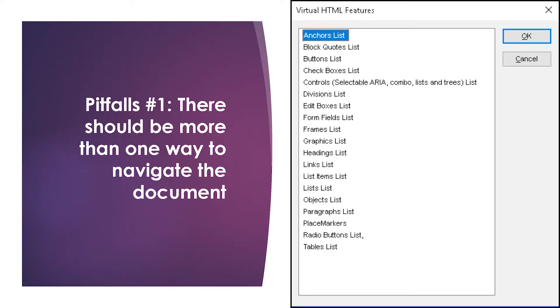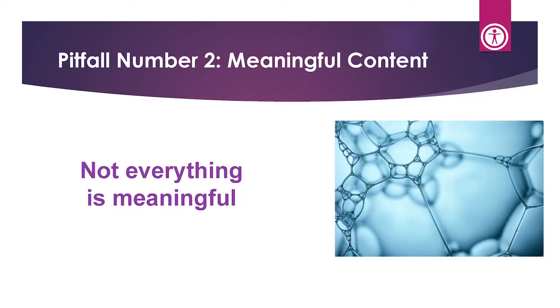Let's talk about pitfalls of testing with a screen reader. Pitfall number one: there should be more than one way to navigate the document. If you don't have a varied and appropriate structure, you're doing a disservice to assistive technology users. They might use the 'list of lists' feature in JAWS — showing all links, all headings, all graphics, any forms — to get a sense of the document structure. If we don't provide identification for all elements, we're failing them.